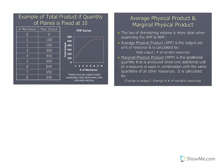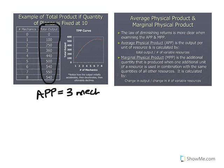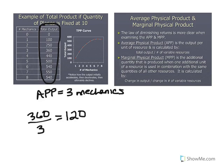The law of diminishing returns is clearer when we examine average physical product (APP) and marginal physical product (MPP). Total physical product is the total output depending on how many variable resources are acquired. Average physical product is simply the total output divided by the number of variable resources. For example, with three mechanics and total output of 360, the average physical product is 360 ÷ 3 = 120 units per mechanic.